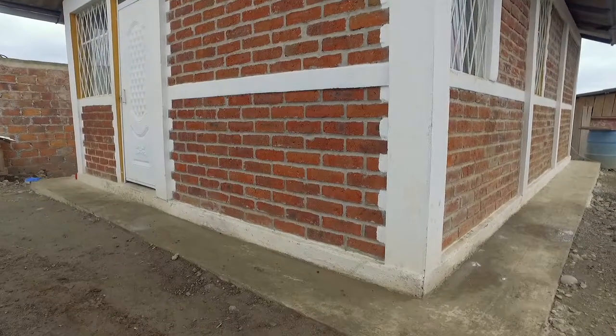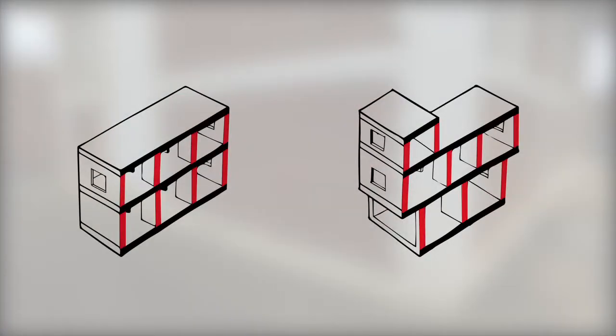The second floor walls must be built directly over the first floor walls, respecting vertical continuity.